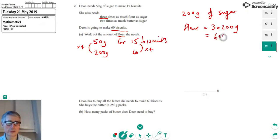We're also told that Dion has to buy all the butter she needs to make 60 biscuits. She buys butter in 250 gram packs. How many packs of butter does Dion need to buy?